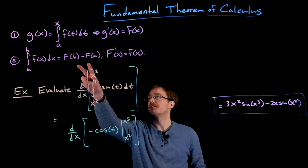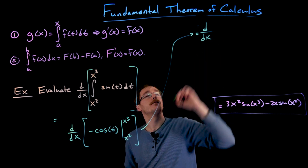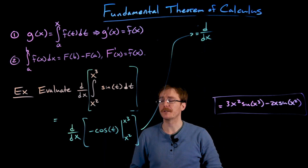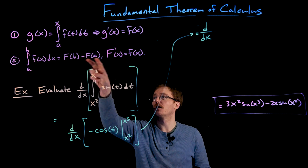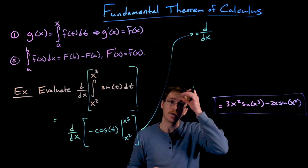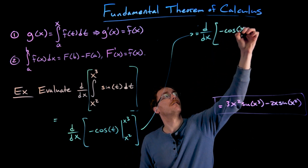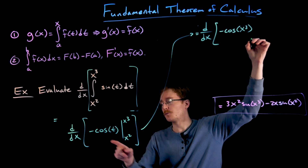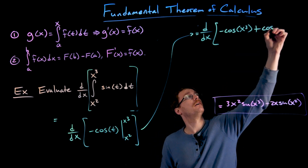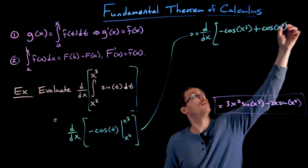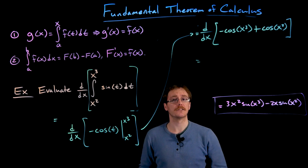Our next step according to the second part of the fundamental theorem of calculus is to evaluate this definite integral. We use our antiderivative, evaluate it at the upper and lower limits of integration, and take the difference. Evaluating at the upper limit gives us negative cosine of x cubed, and we subtract the antiderivative at the lower limit, which turns into addition, giving us positive cosine of x squared. Remember, we have not differentiated with respect to x yet — that step comes last.